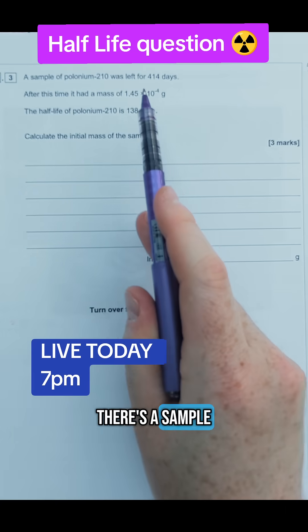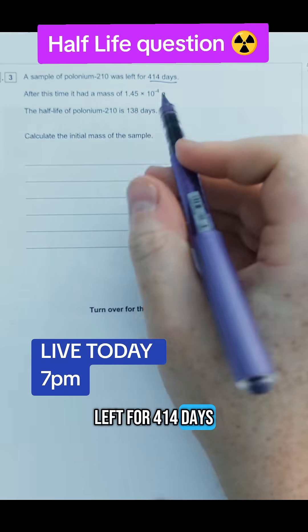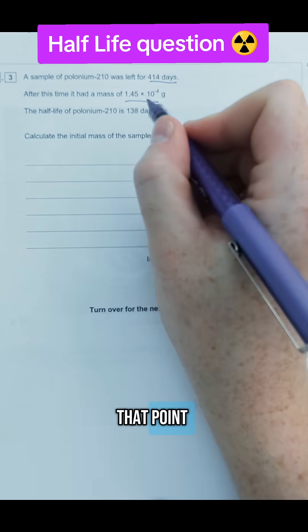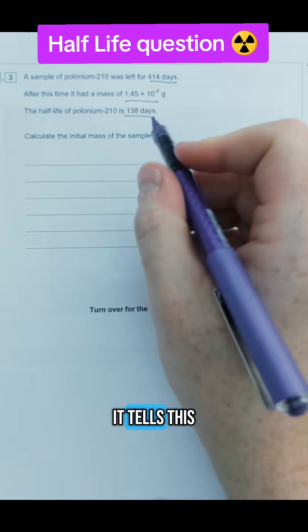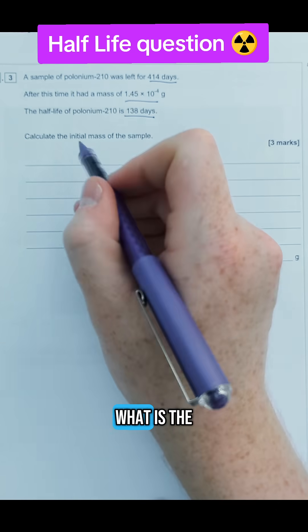This question tells us there's a sample left for 414 days. It had a mass by the end of that point of 1.45 times 10 to the minus 4 grams. The half-life it tells us is 138 days. What is the initial sample?